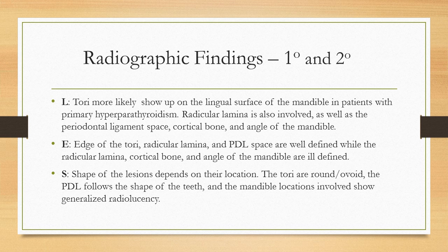E: The edge of the tori, the radicular lamina, and PDL space are well-defined, while the radicular lamina, cortical bone, and angle of the mandible are ill-defined.